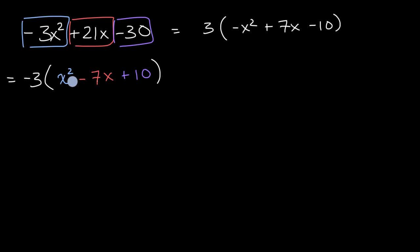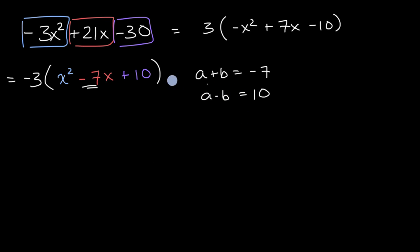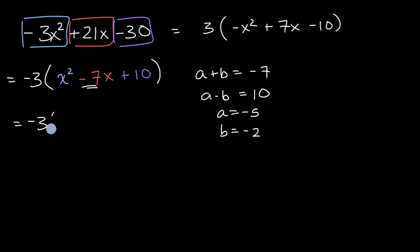Now let's see if we can factor this thing a little bit more. Can I think of two numbers where if I add them I get negative seven, and if I multiply them I get 10? They'd have to have the same sign because their product is positive. A could be equal to negative five and B equal to negative two. So I can rewrite this whole thing as negative three times x plus negative five — which is x minus five — times x plus negative two — which is x minus two. And now we have factored completely.